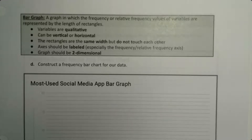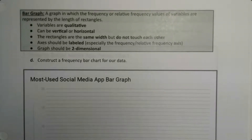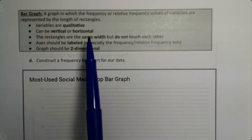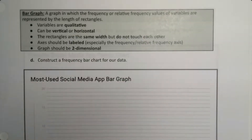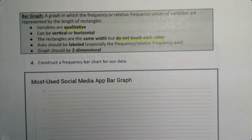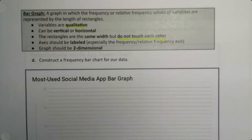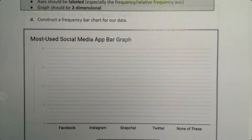In this video I'm going to show you how to make both a bar graph and a Pareto graph, both by hand and with StatCrunch. A bar graph has vertical bars — flat, two-dimensional — they should be labeled, and all the rectangles should be the same width but do not touch each other. They don't touch because it's for qualitative data, meaning there's no connection between the groups. That will not be the case in section 2.2 when we make histograms, which are bar charts for quantitative data.